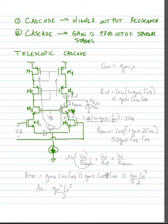We'll tie the gates of transistors M3 and M4 to some bias voltage VB, and this is just a DC bias voltage. M5 and M6, we have a current mirror. M7 and M8, we have a current mirror. We take our output between M4 and M6.